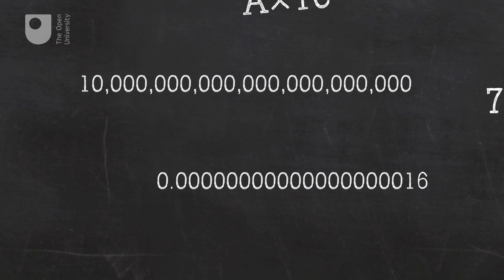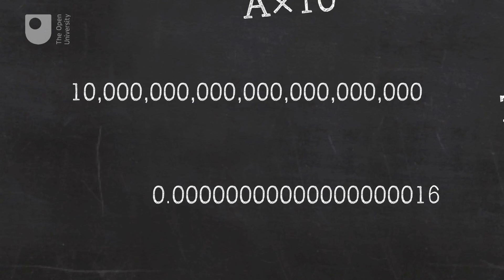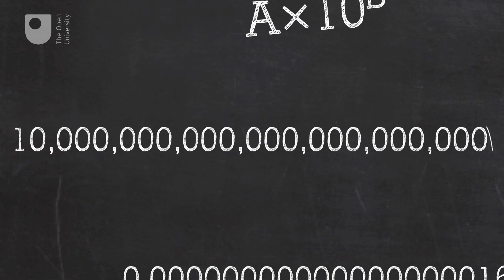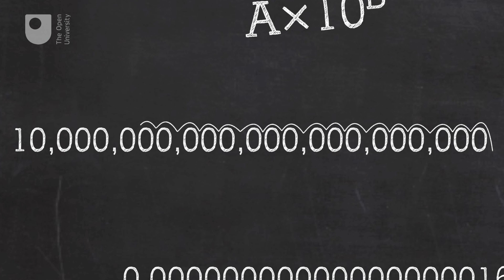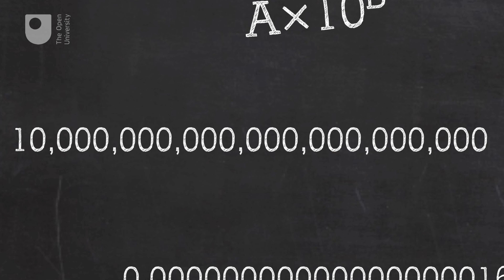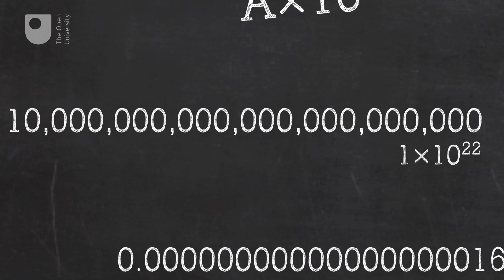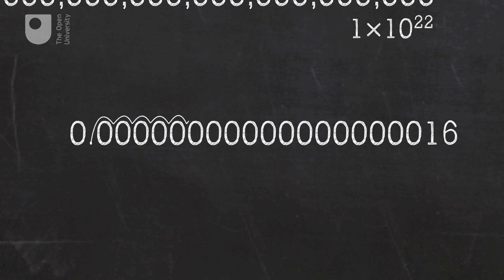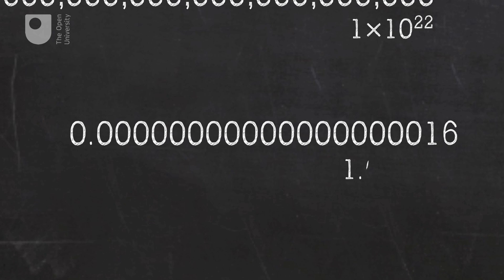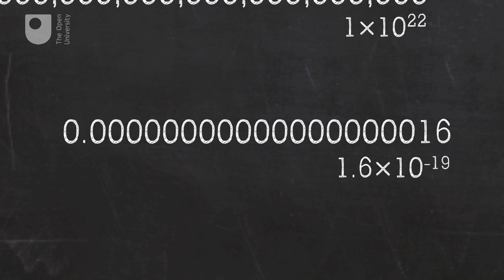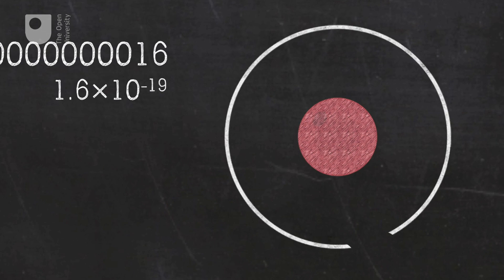You should now be able to write our original very large and very small numbers in scientific notation. For the large number, the decimal point hops over 22 digits and is left with a one in front of it — in scientific notation this is 1 times 10 to the 22. Don't worry, most numbers like this are normally already written in scientific notation. For the very small number, the decimal point hops right over 19 digits, leaving us with 1.6 — in scientific notation this is 1.6 times 10 to the minus 19, which is the electric charge of a single electron, an important number that's much easier to remember in scientific notation.